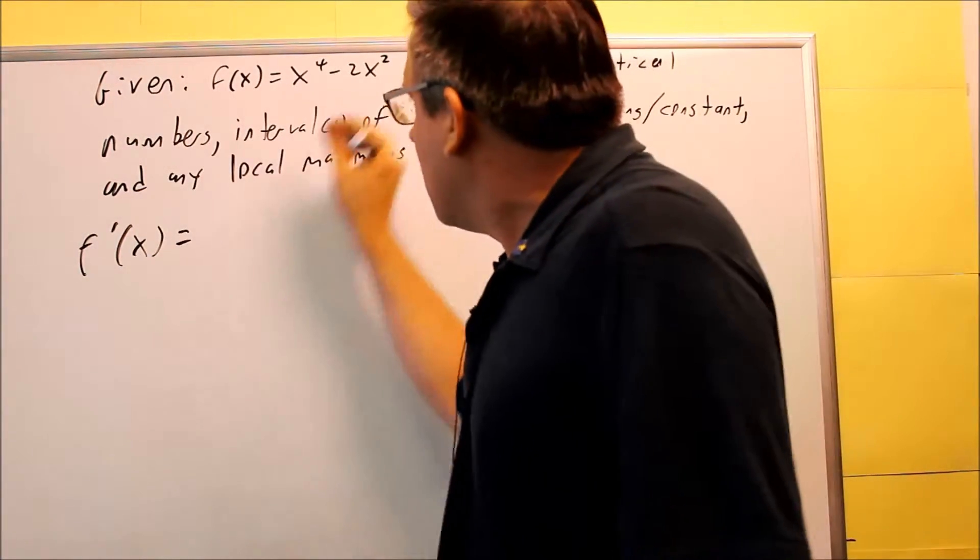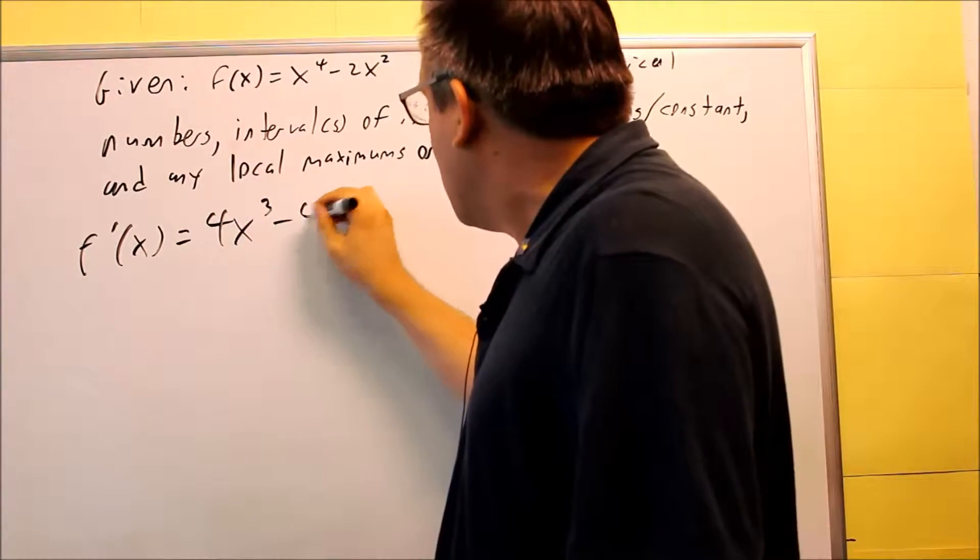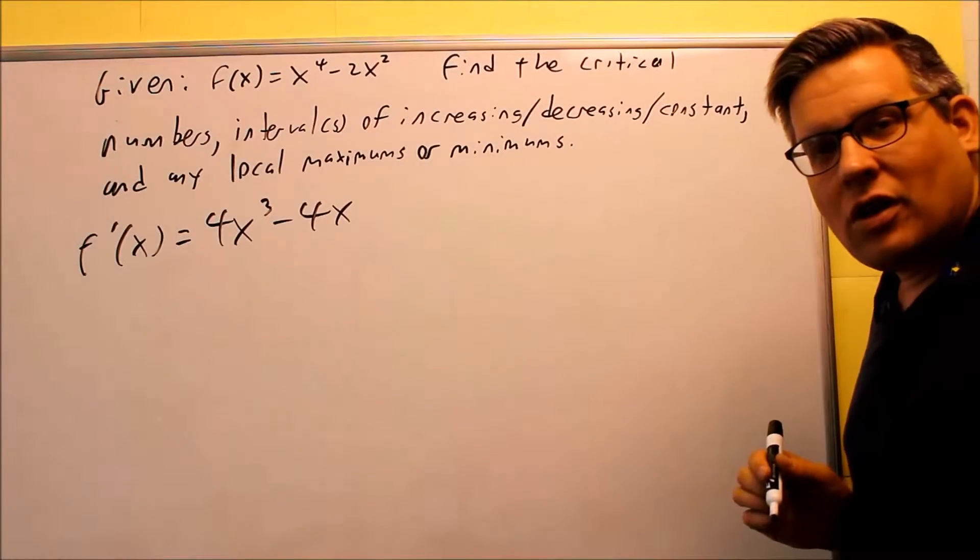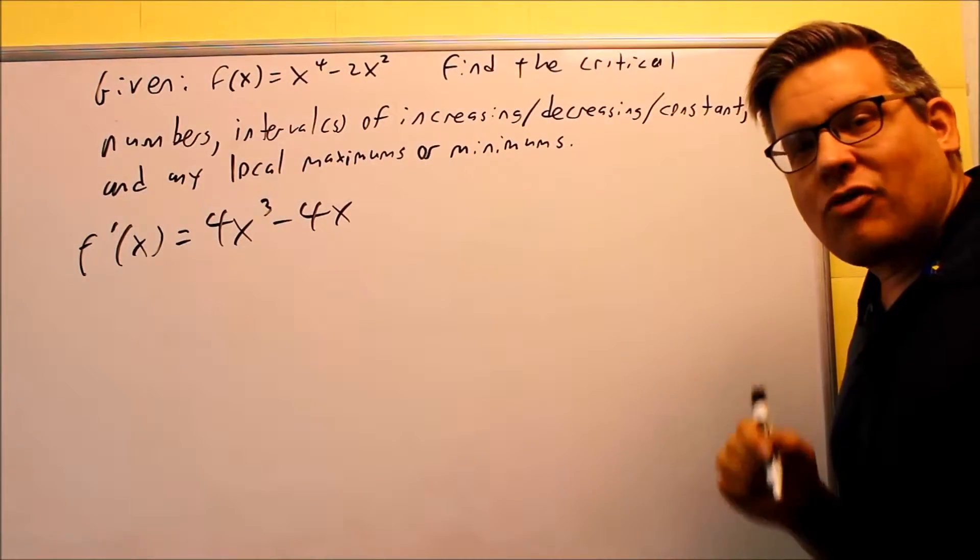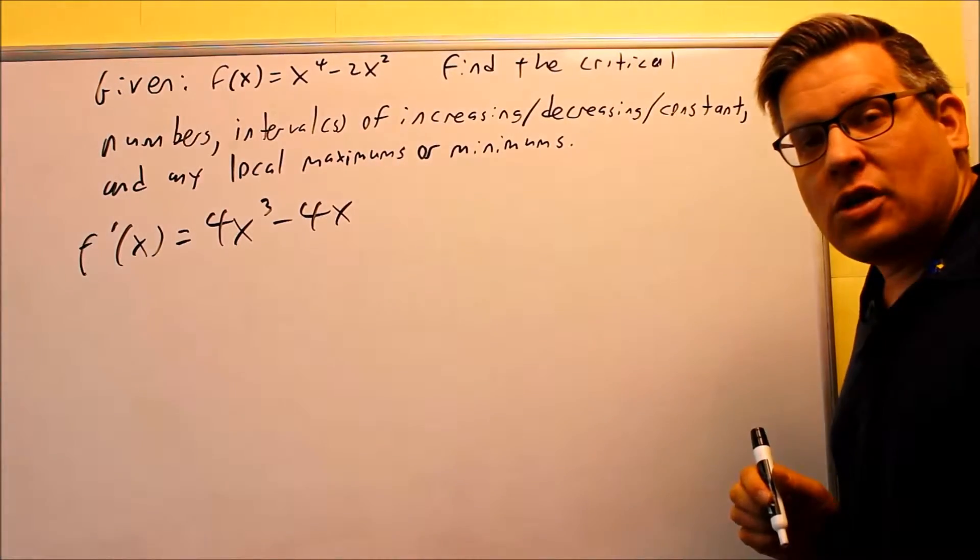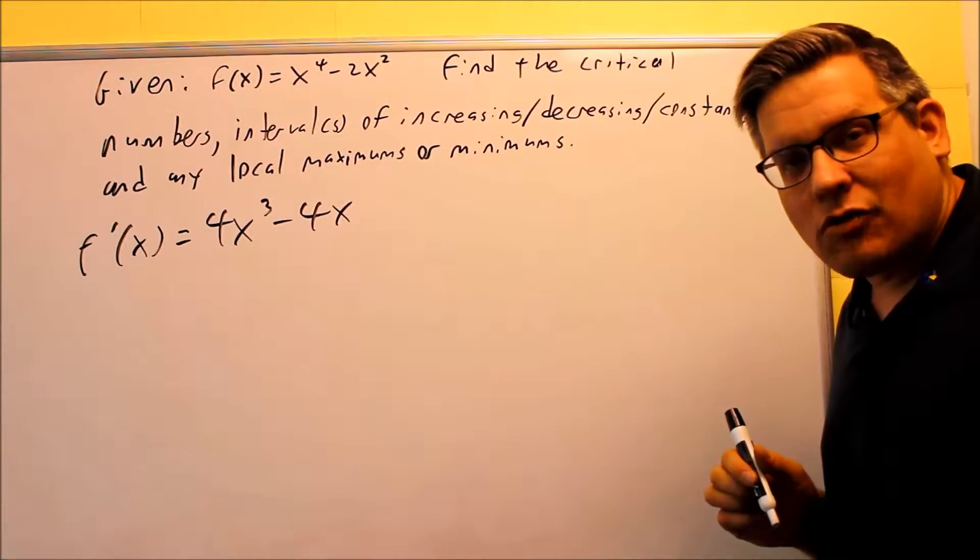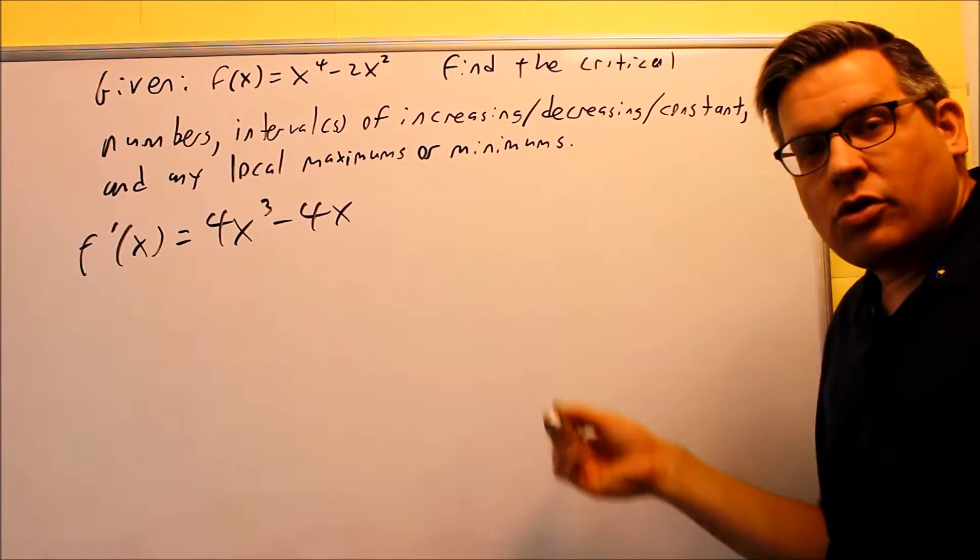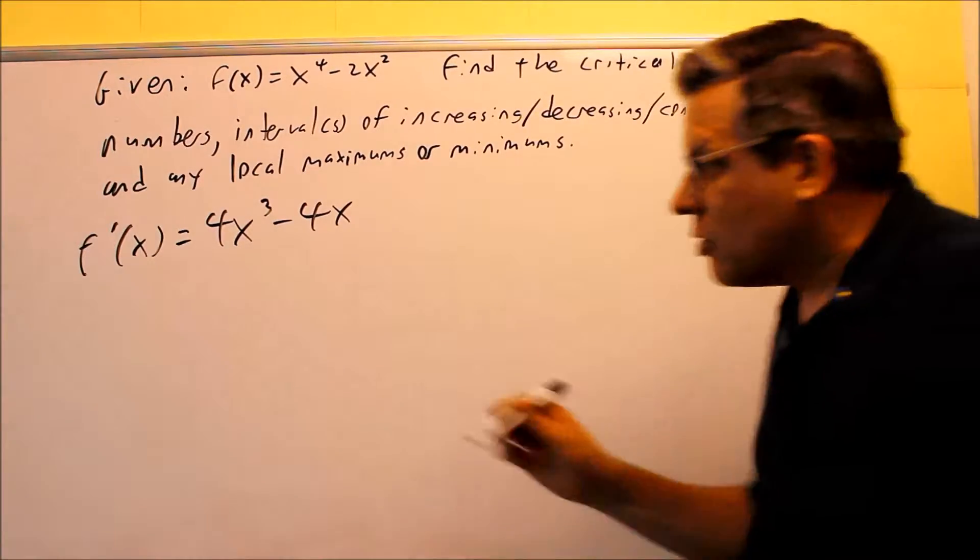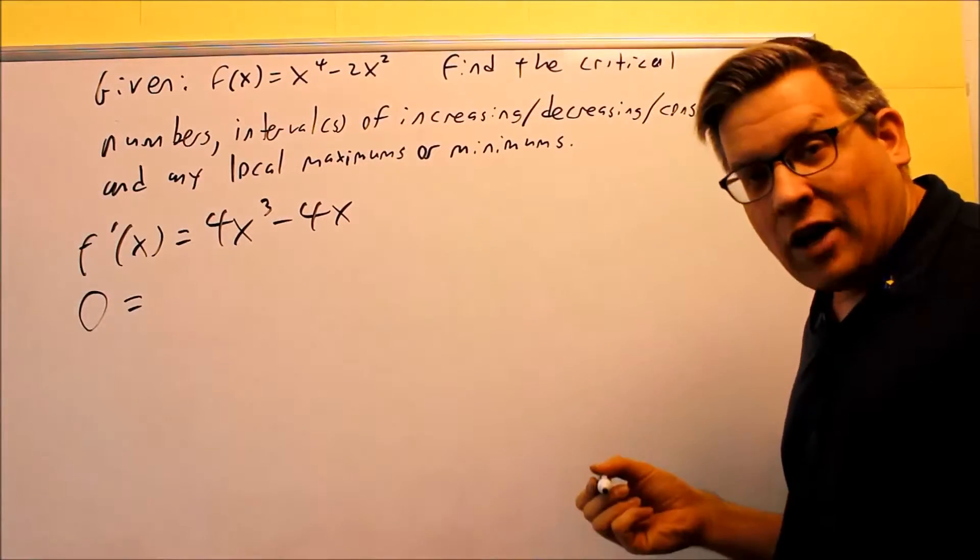Okay, so the first derivative is going to be using the power rule here. Four comes down, 4x cubed minus 4x to the first power. So using the power rule, that's your first derivative. Now in order to find the critical numbers, we can find that two ways. The first way is we look for any place where the first derivative is going to be undefined, but because we have a polynomial, we're not going to have any places where it's undefined. So the next thing we're going to do is set the first derivative equal to zero. That's the other way we can find critical numbers. Now whenever you have a polynomial that's set equal to zero, what you want to do is factor it.